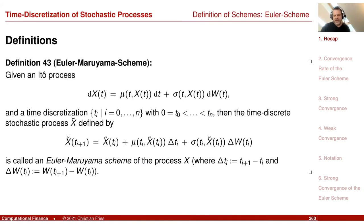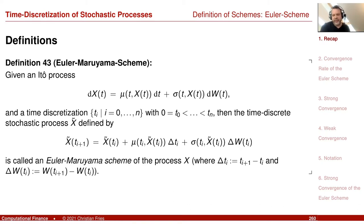Here is the Euler scheme. What I would like to do today is start proving the convergence of the Euler scheme to the solution of the stochastic differential equation. I need about two sessions to prove strong convergence, and then one or two more sessions to prove weak convergence. So we will prove different types of convergence.